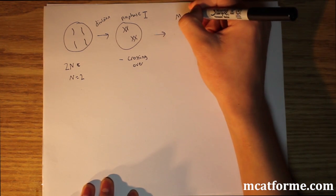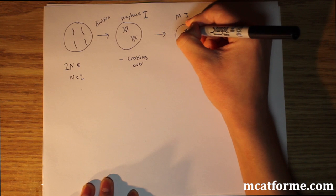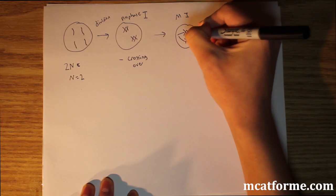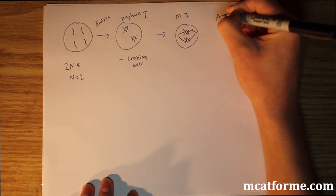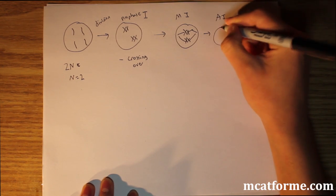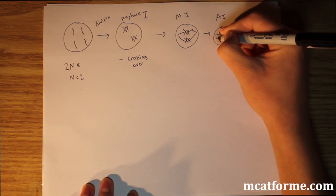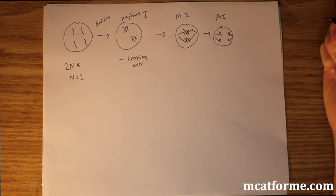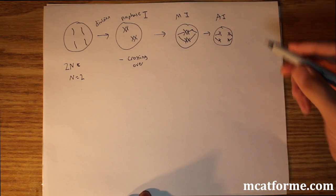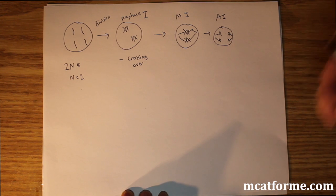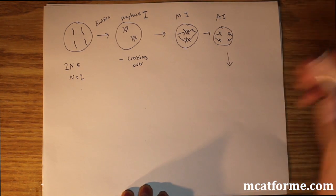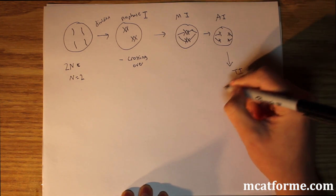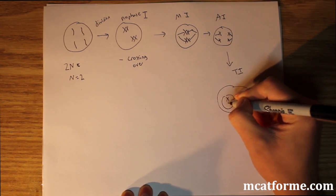After prophase 1, we go into metaphase 1, which is just the lining up. Then anaphase 1 pulls everything apart — but now, instead of pulling apart sister chromatids like in mitosis, we're separating homologous chromosomes. Always remember what we're separating. Then we go into telophase 1, which just forms their own nuclear envelopes.